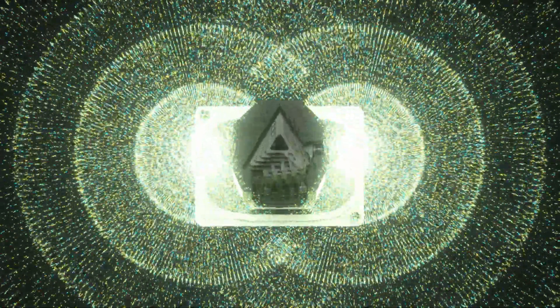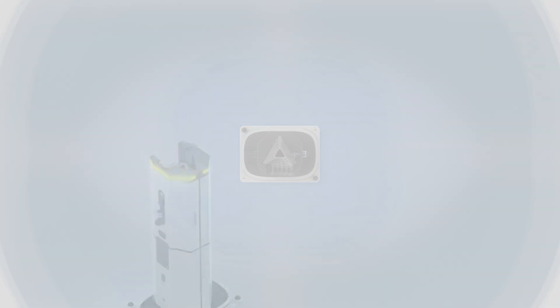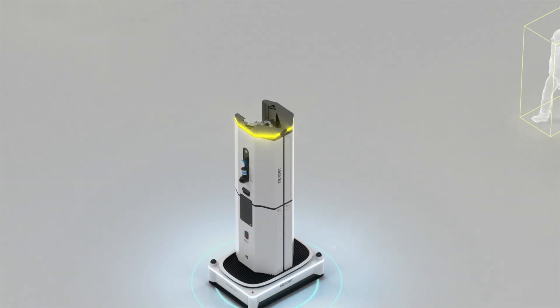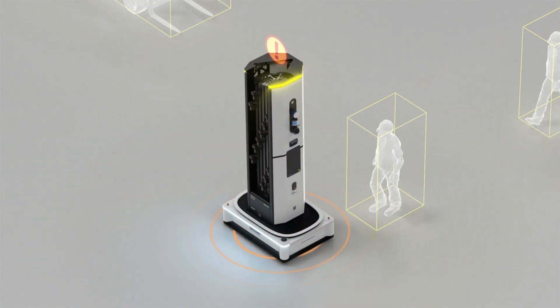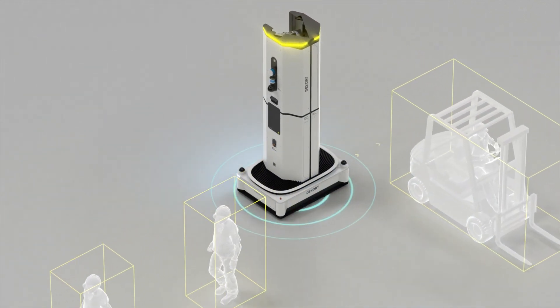Our state-of-the-art perception system uses machine learning to process the information from all sensors, enabling us to detect and classify people, static and dynamic objects. This data is then used to safely avoid any obstacles in the warehouse, like going around or out of the way of any forklifts or colleagues.